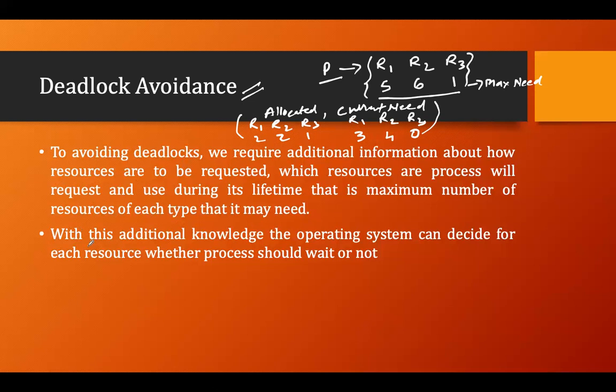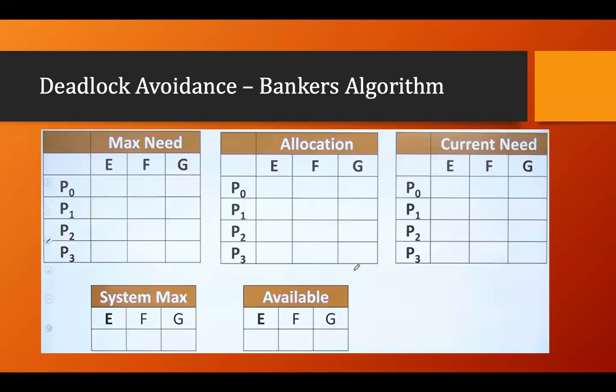With this additional knowledge, the operating system can decide for each resource whether a process should wait or not. After calculating all the requirements of a process, we decide whether it needs to wait or can proceed with the resources. The data structure we use here is used in the Banker's Algorithm — a very famous deadlock avoidance algorithm.